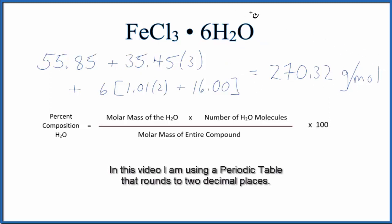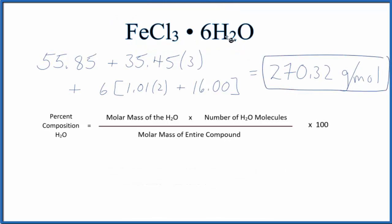So I've calculated the molar mass for the entire compound here. We get 270.32 grams per mole for iron 3 chloride hexahydrate.